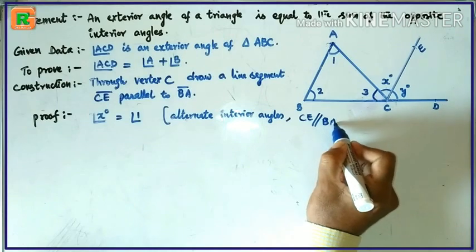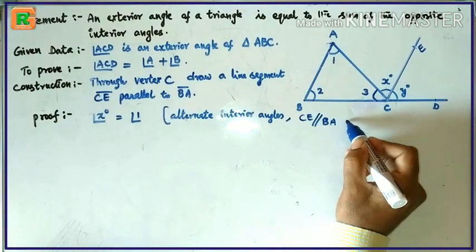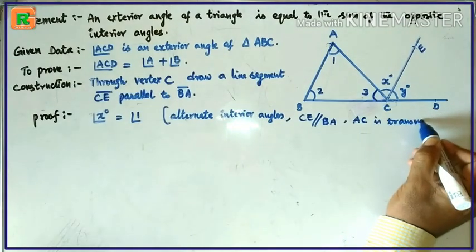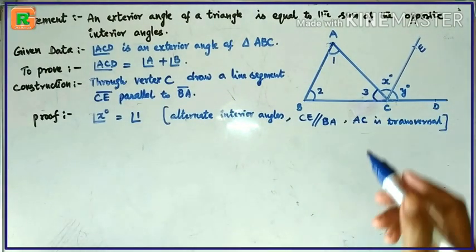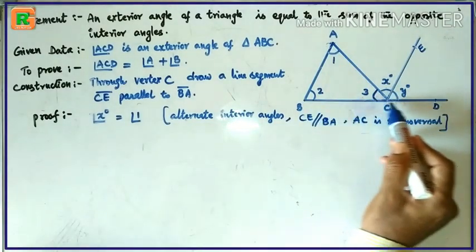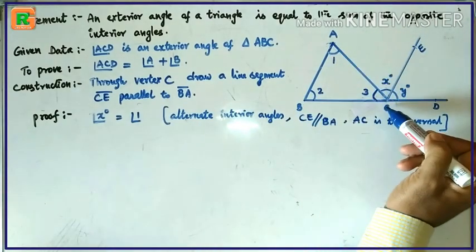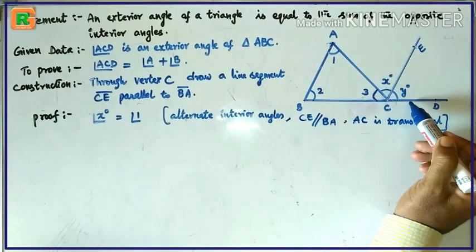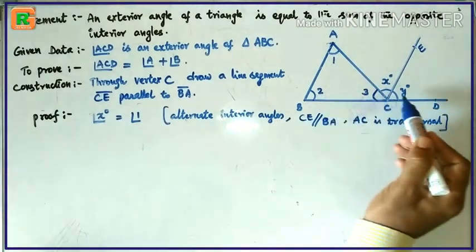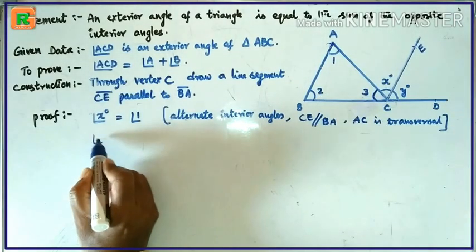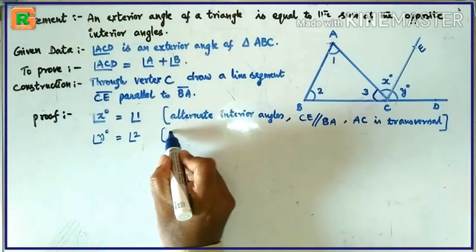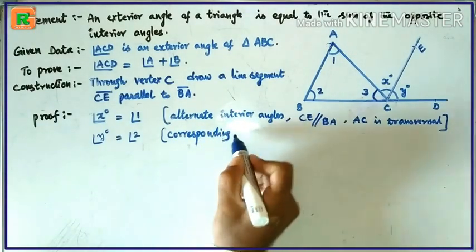CE is parallel to BA, and BC is a transversal. Then angle 2 and angle Y are corresponding angles. Since corresponding angles are equal, angle Y equals angle 2.